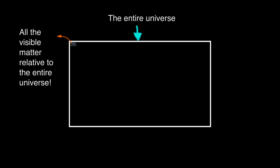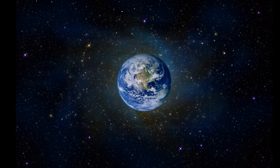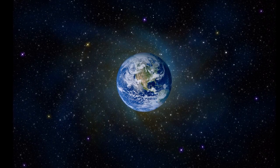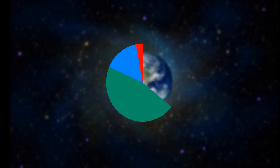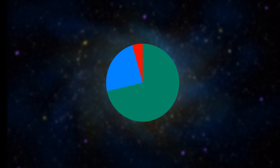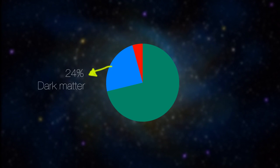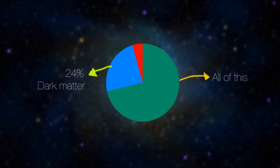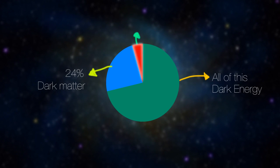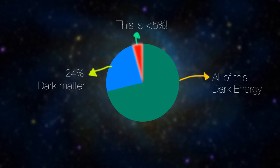Yep you heard me right. Everything we have, can, or will ever see makes up just under 5% of the entire universe. Dark matter constitutes about 24% of our universe and the rest is dark energy. This is what 5% looks like.